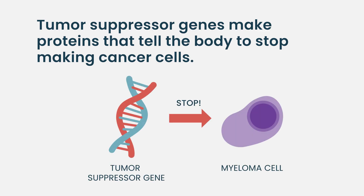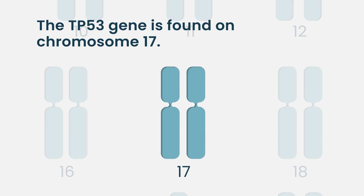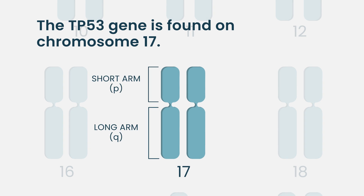Our bodies make little cancers all the time, and are supposed to catch and reject them. When you have a mutation of the P53 gene, it allows cancer cells to exist, replicate, and expand in an unregulated way. P53 is encoded on the 17th chromosome — specifically on the short arm, known as 17p — and that is where P53 is located.